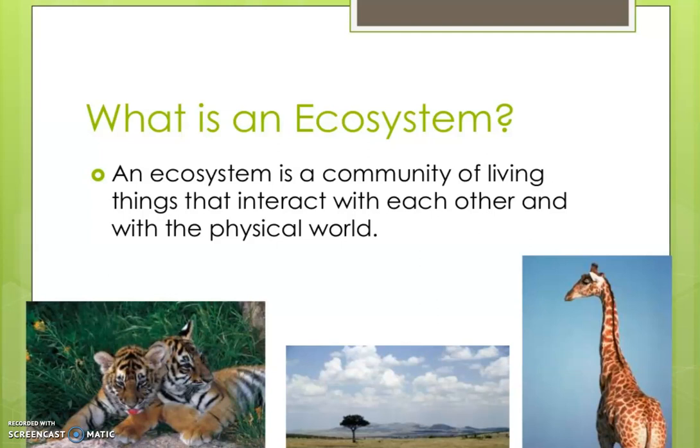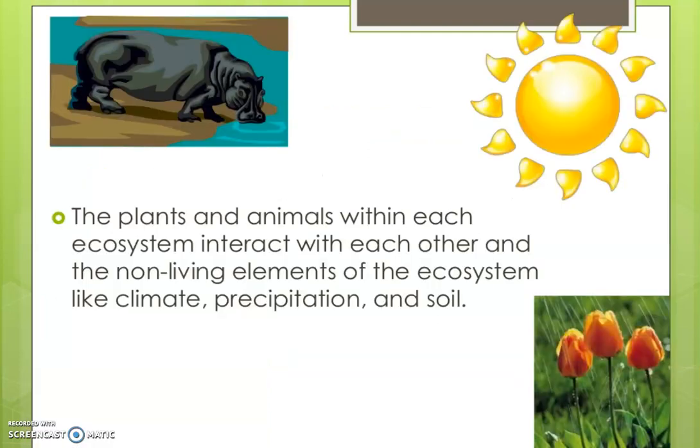What is ecosystem? It is a community of living things that interact with each other and with the physical world. The plants and animals within each ecosystem interact with each other and the non-living elements of the ecosystem, like climate, precipitation and soil.